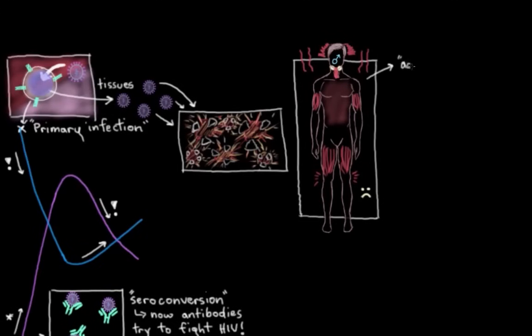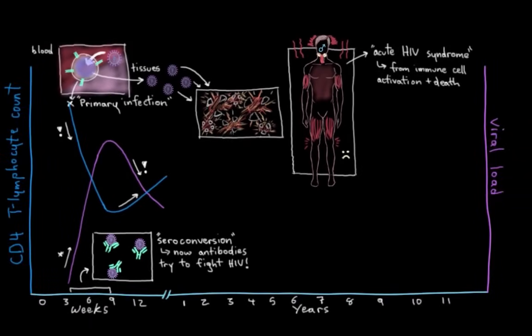These are some of the more common symptoms of an acute infection with HIV. This flu-like illness that people experience is referred to as acute HIV syndrome. The reason for a lot of these symptoms is because when immune system cells get really active, or when they die off, both of which are happening here, they tend to release these little chemical signals that cause inflammation throughout your body.